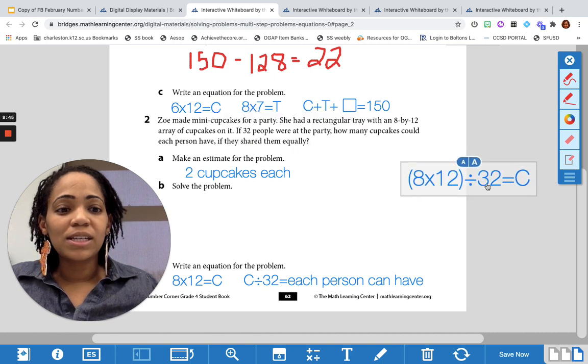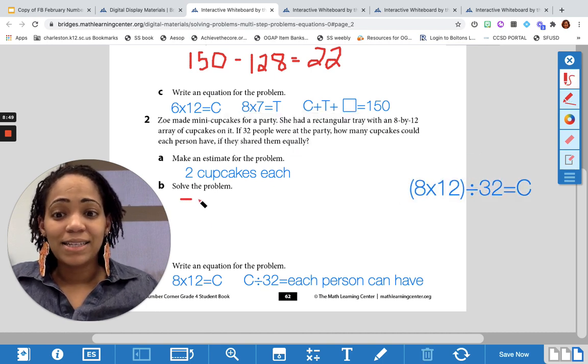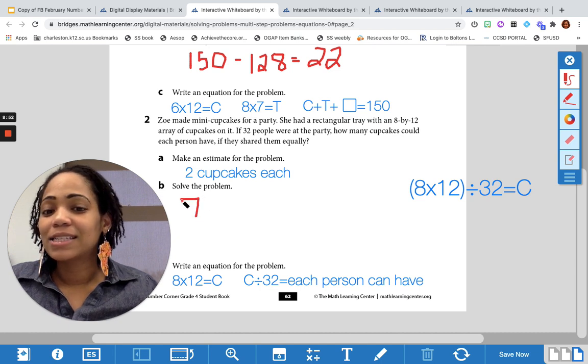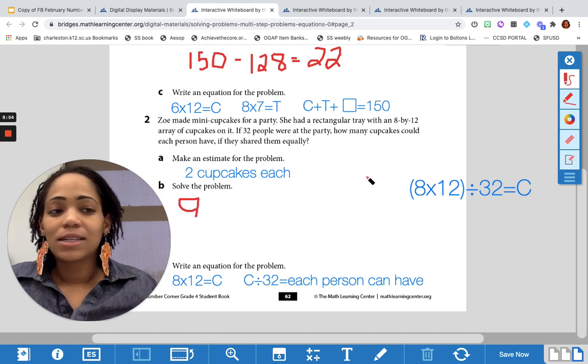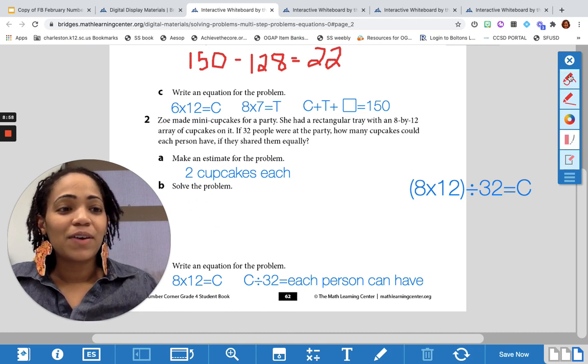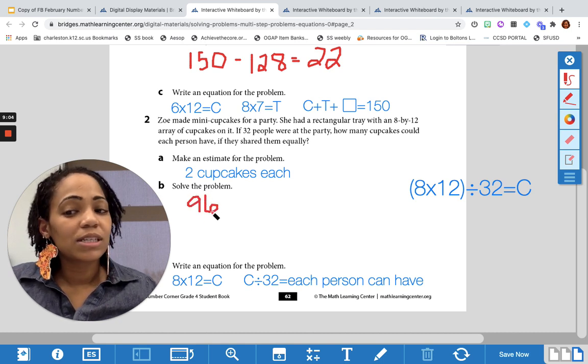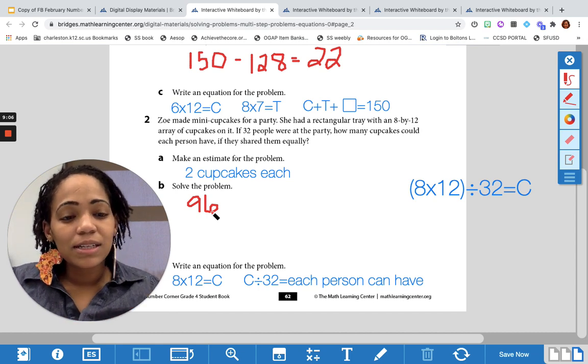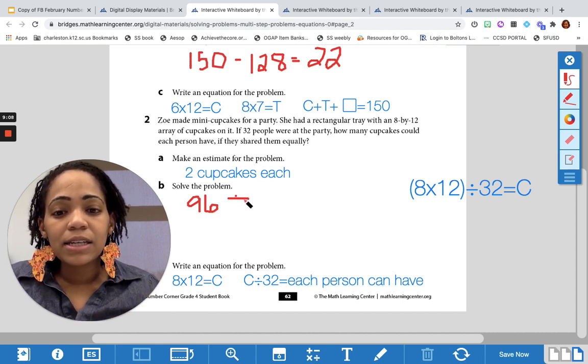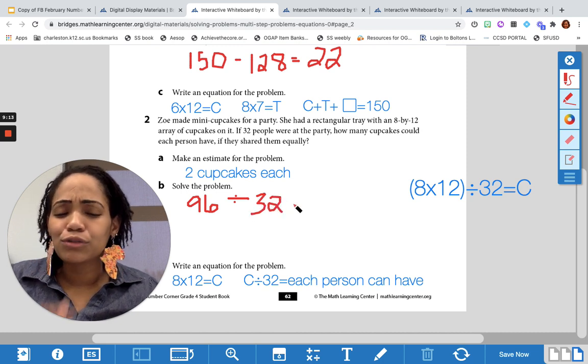All right, so what is 8 times 12? 8 times 12 is 96. Let me rewrite that. Okay, 8 times 12 is 96 because 8 times 10 is 80 and 8 times 2 is 16. 16 plus 80 is 96. And we're going to divide that into 32 groups, and we're trying to figure out how many in each group.